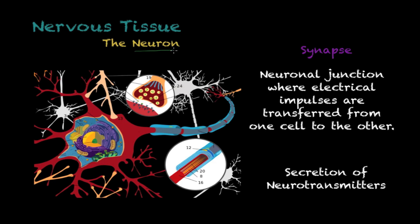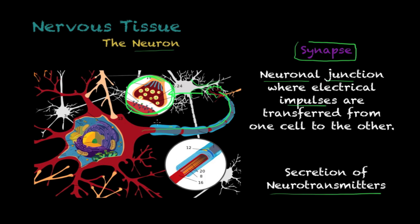Another feature of the neuron is the synapse. A synapse is a neuronal junction where electrical impulses are transferred from one cell to the other. The axon ends by communicating with another neuron, and at the neuronal junction — the synapse — electrical impulses or substances called neurotransmitters are exchanged between these two cells.